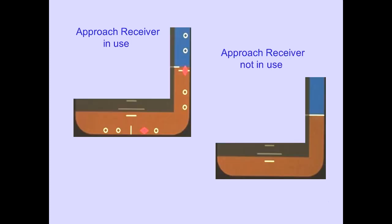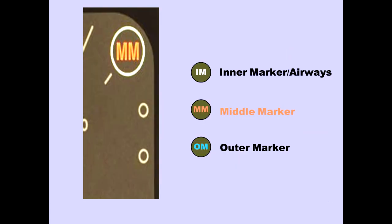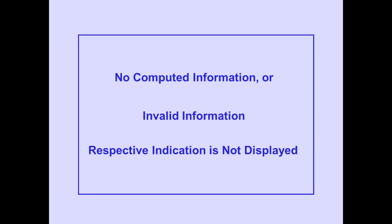Scale and pointer are removed when the approach receiver is not in use. Marker beacon enunciation is displayed on the attitude indication when passing a beacon. IM indicates passing an inner marker or airways beacon. MM indicates passing a middle marker beacon. OM indicates passing an outer marker beacon. For the attitude indication, when no computed information is received or the information is determined to be invalid, the respective indicator is not displayed.